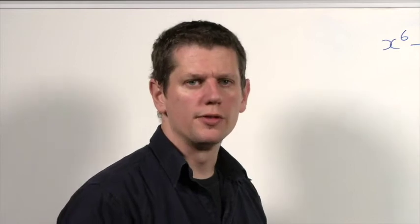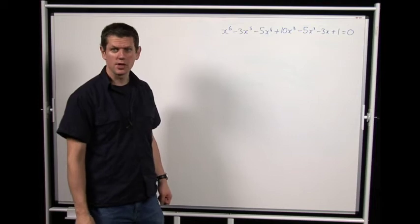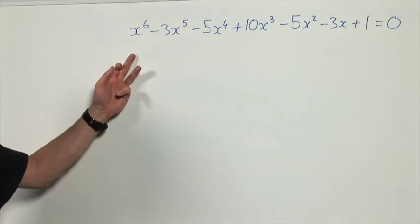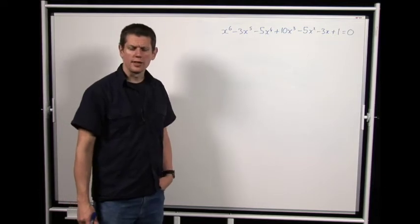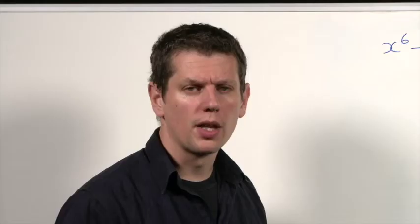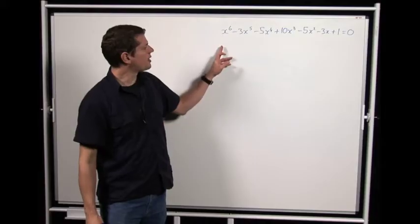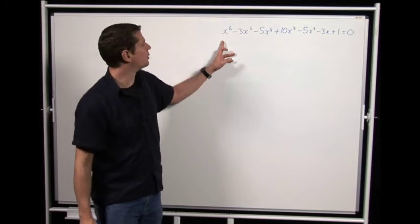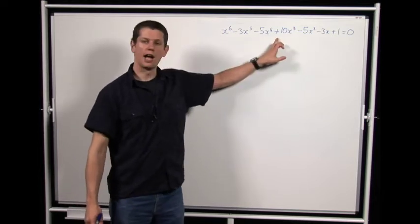After doing all the work of squaring that equation, gathering like terms, and dividing both sides by 2, you're left with this degree-6 equation — you can pause and check for yourself. I don't know anything about solving degree-6 equations in general, so we'd better hope there's something special about it. And there clearly is: the coefficients read the same forwards and backwards — there's a 1 at both ends, a −3 just inside, then a −5, and then a 10.